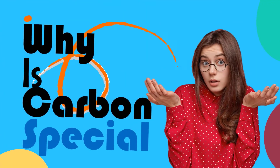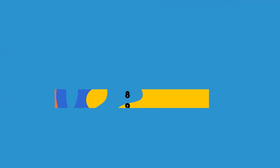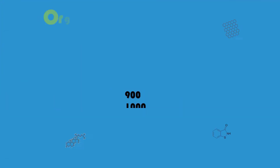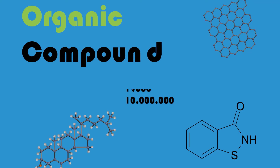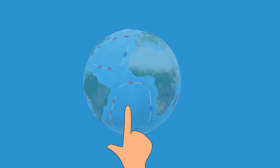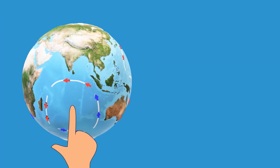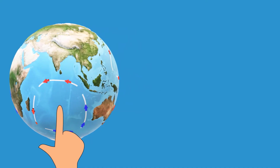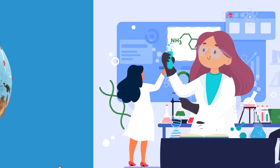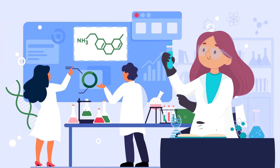Why is carbon special? There are now more than 10 million organic compounds known by chemists. Many more undoubtedly exist in nature, and organic chemists are continually creating new ones.